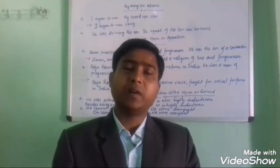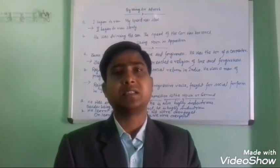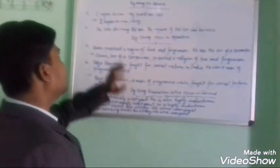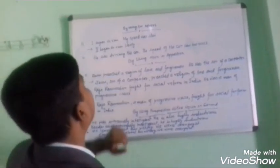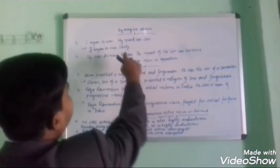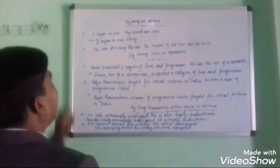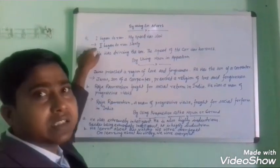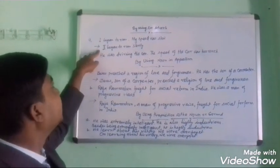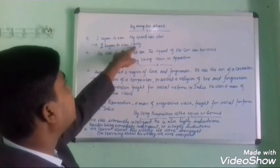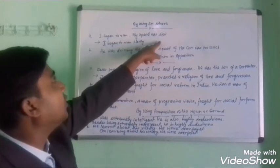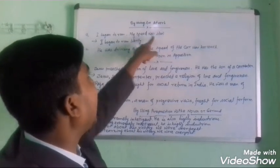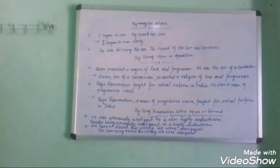By using an adverb, we shall join two sentences. For example: 'I began to run. My speed was slow.' I have joined these two sentences. The answer is: 'I began to run slowly.' So 'slow' is the adjective, and here 'slowly' is the adverb.